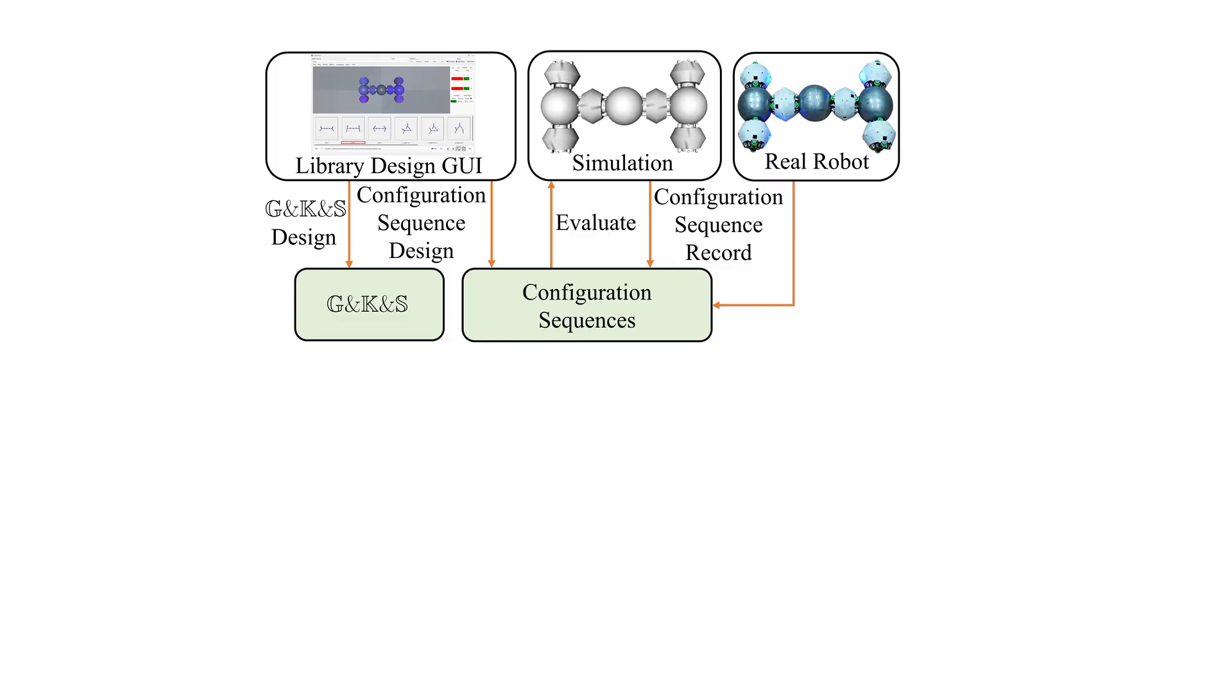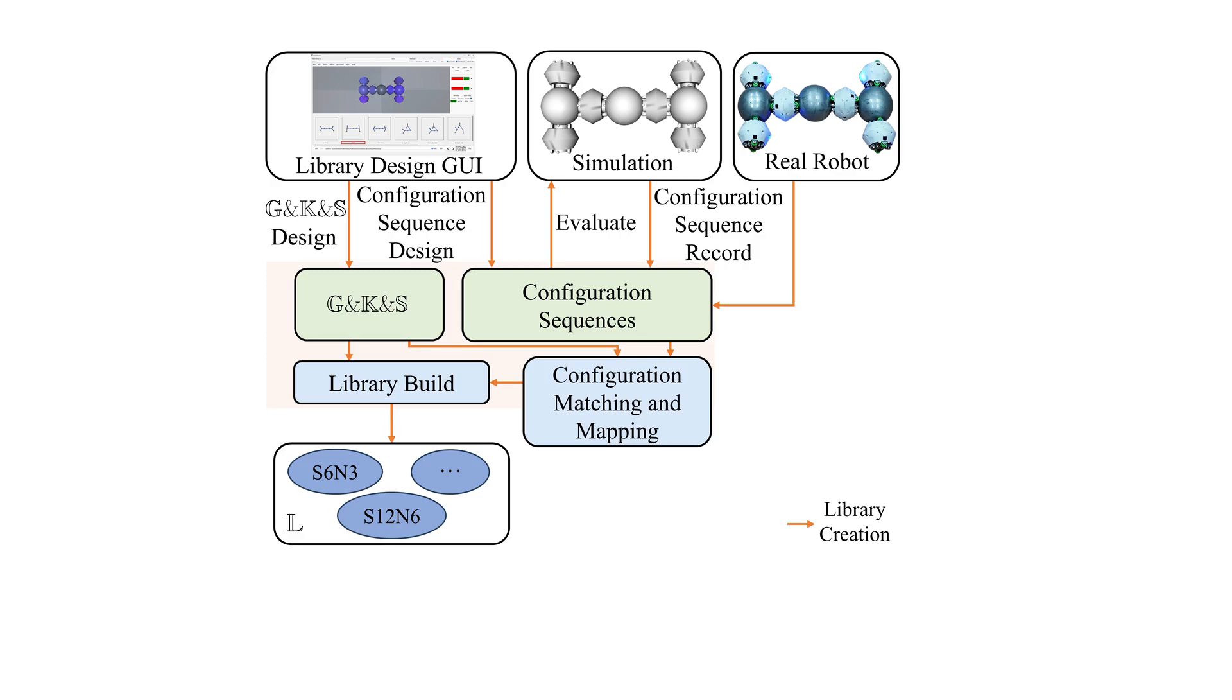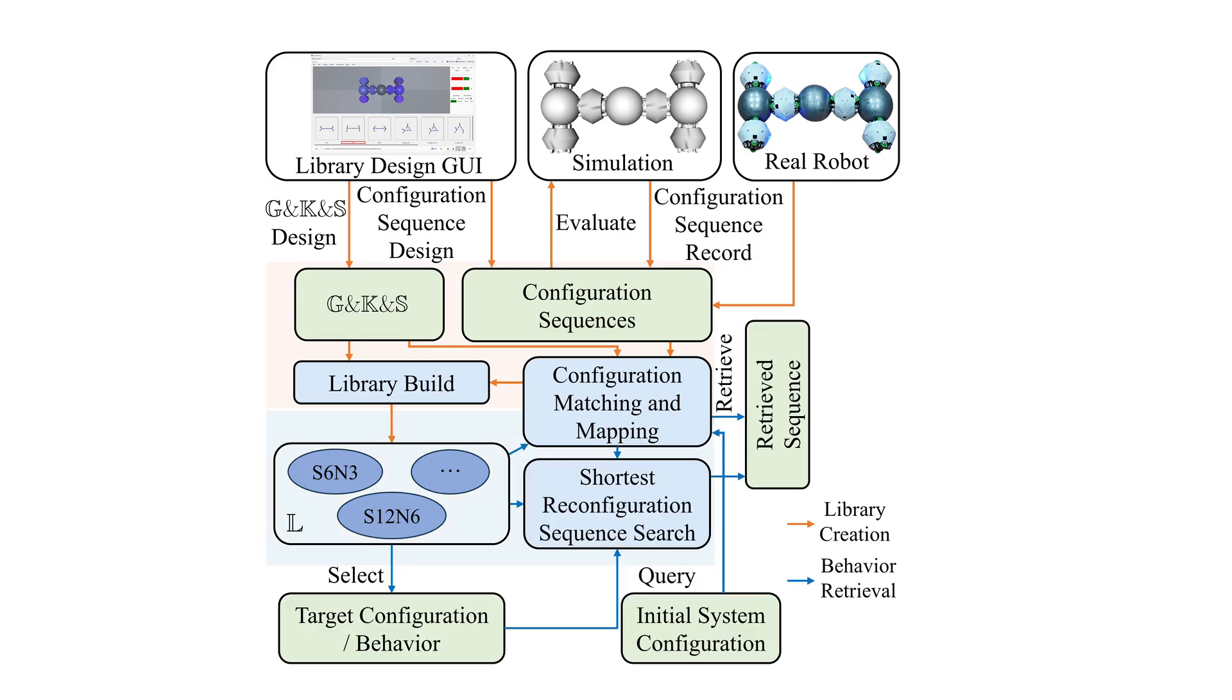A library with configuration design tools is proposed, defining behaviors and feasible kinematic transitions between configurations. The executable behavior can be efficiently retrieved from the library by combining the proposed configuration matching and mapping algorithm.